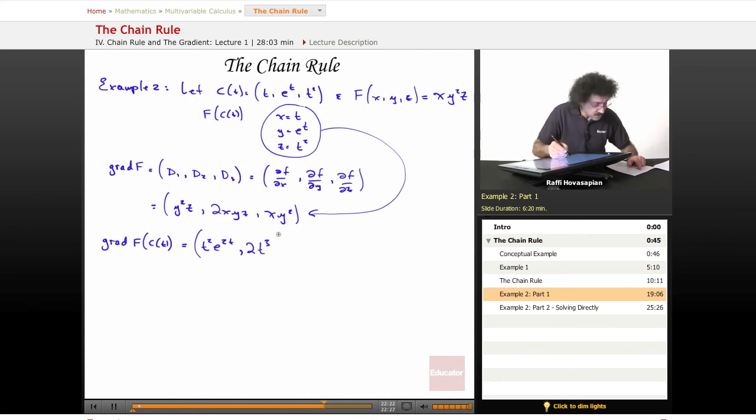2 times x, which is t, y, which is e^t, z, which is t^2. I end up with 2t^3·e^t. And x·y^2 is t times e^(2t) times t^2. Wait, y squared is e^(2t). Yes, there we go, e^(2t). Okay, so that takes care of this one. That's the grad of f evaluated at C of T.